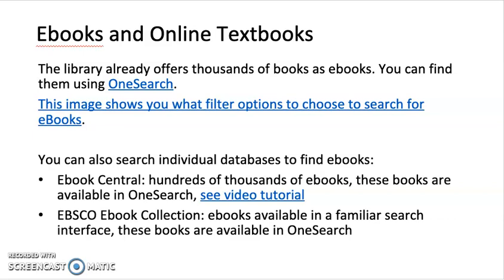The one I would recommend the most is E-book Central, which has hundreds of thousands of e-books. Some of them you can read on your computer, and some of them you can even download for two weeks at a time, like you're checking them out from the library. You can watch a tutorial on the library's website on how to use E-book Central. EBSCO e-book collection is another e-book database in a familiar search interface — the EBSCO one — which you've maybe used before in databases like Academic Search Complete.